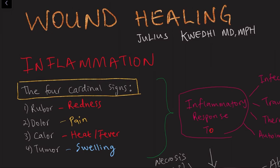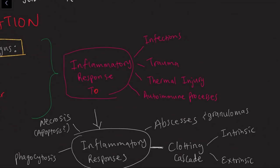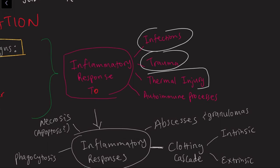Let me remind you about inflammation. You know the four cardinal signs of inflammation: rubor, which is redness; dolor, which is pain; calor, which is heat or fever; and tumor, which is swelling. The inflammatory response is elicited against infections, trauma, thermal injury such as sunburns or steam injury, and autoimmune processes as well.